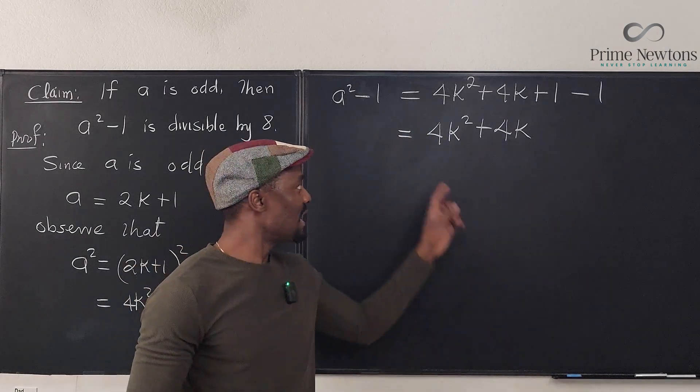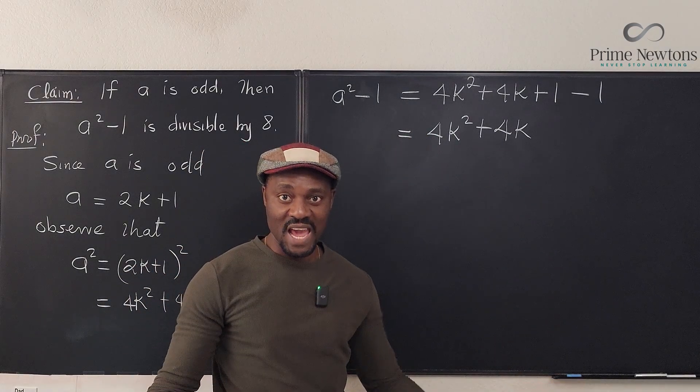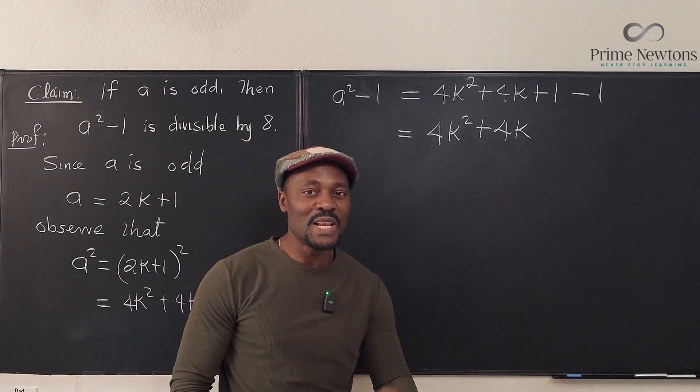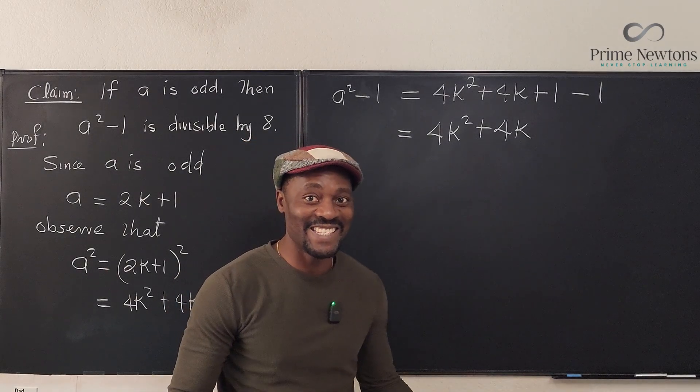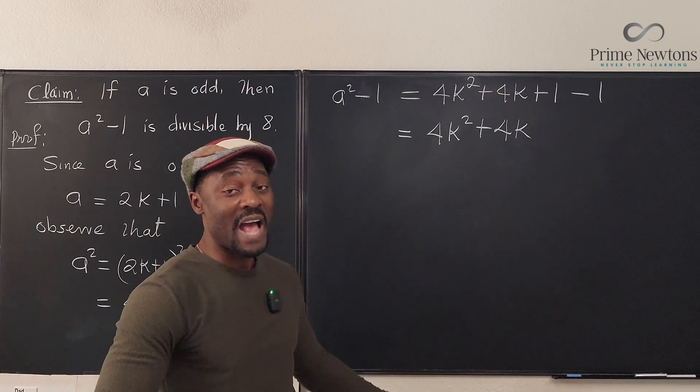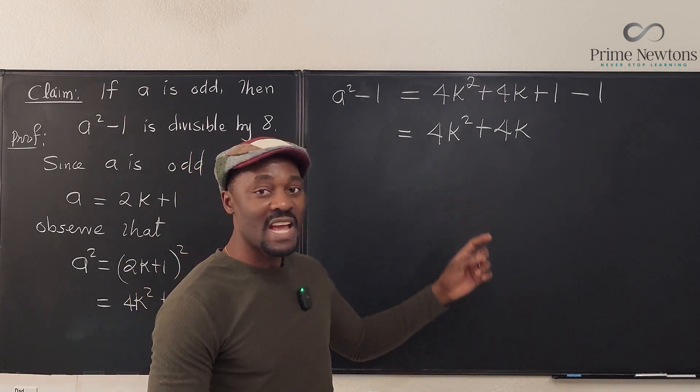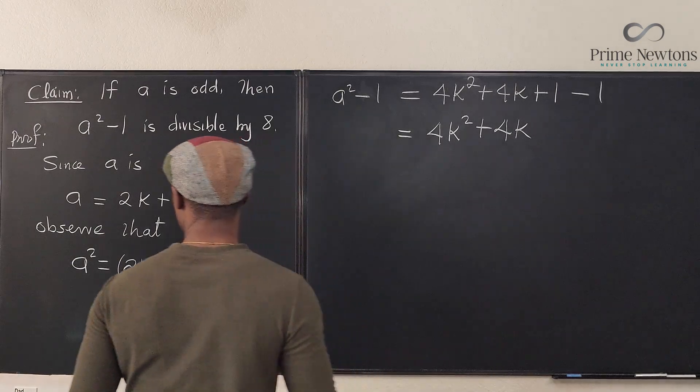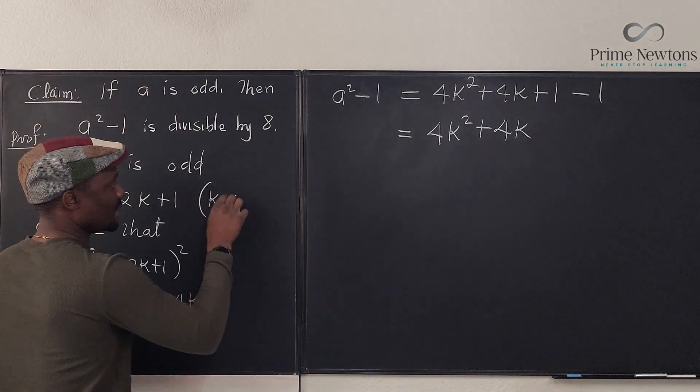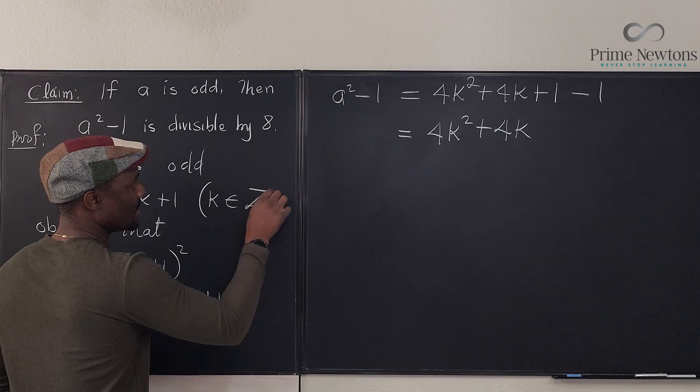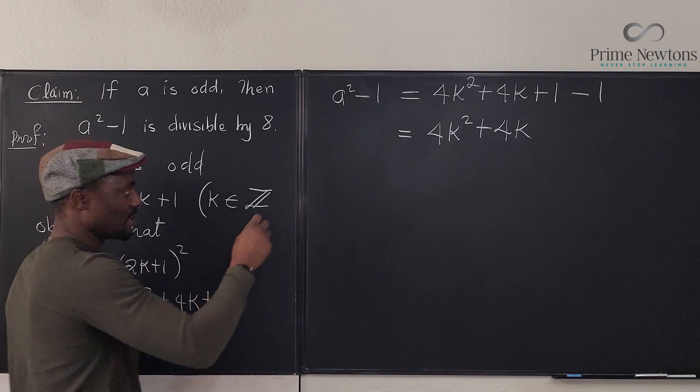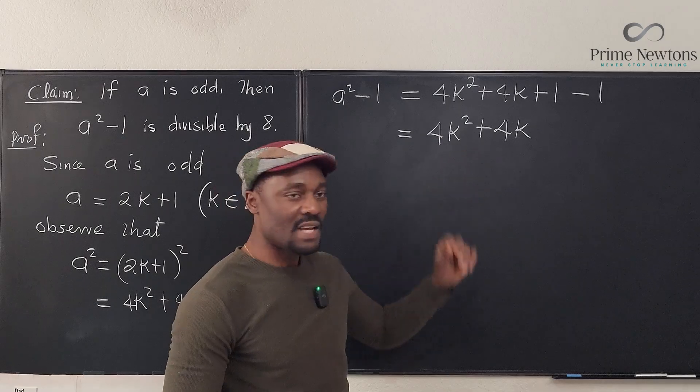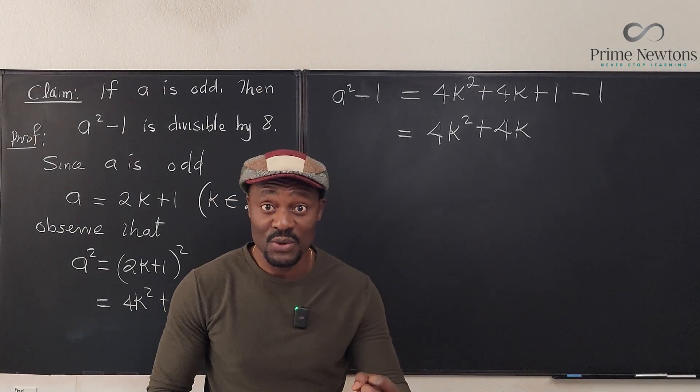So the claim is that this number is divisible by eight, whatever k is. Well, we really don't need to know what k is. We just need to ask ourselves, is k an even number? Because this is an integer. I should have said that from beginning. k is in the set of integers. It doesn't matter if it's a positive integer or a negative integer. So if k is an integer, it is either even or odd.